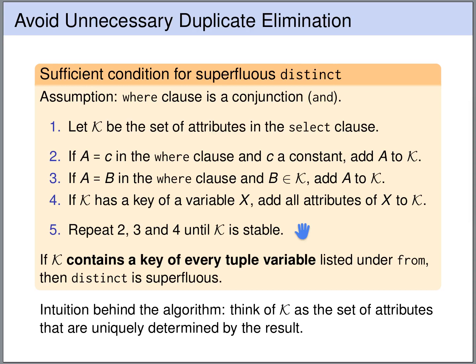When K is stable, we stop and check the following condition: we check whether K contains a key of every tuple variable listed under FROM. K is the set of attributes uniquely determined by the output row. If K contains a key of every tuple variable listed under FROM, then K uniquely determines the row of each table queried, giving a unique combination of input rows that led to this output — and therefore DISTINCT is superfluous.